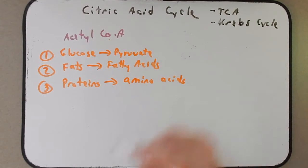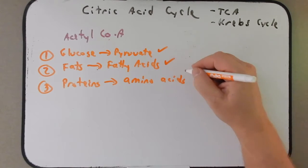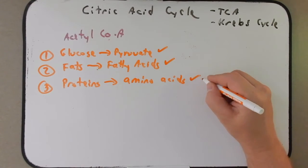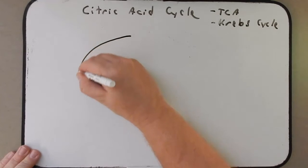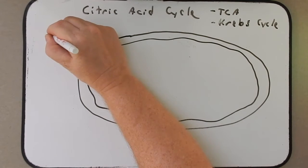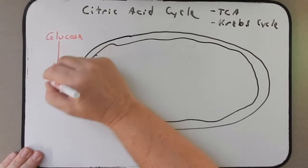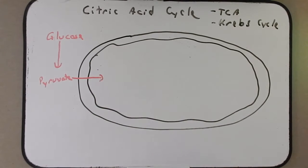We're going to talk about each of these — mainly about the first example, then spend a little time on fatty acids, and even less on amino acids, but we'll cover all three. I'm going to draw a mitochondria. The conversion of these three substrates into acetyl coenzyme A occurs in the mitochondria, and the citric acid cycle occurs in the mitochondria. Remember, in the cytoplasm glucose is converted into pyruvate through glycolysis. Pyruvate then crosses the mitochondrial membranes and enters into the matrix of the mitochondria.